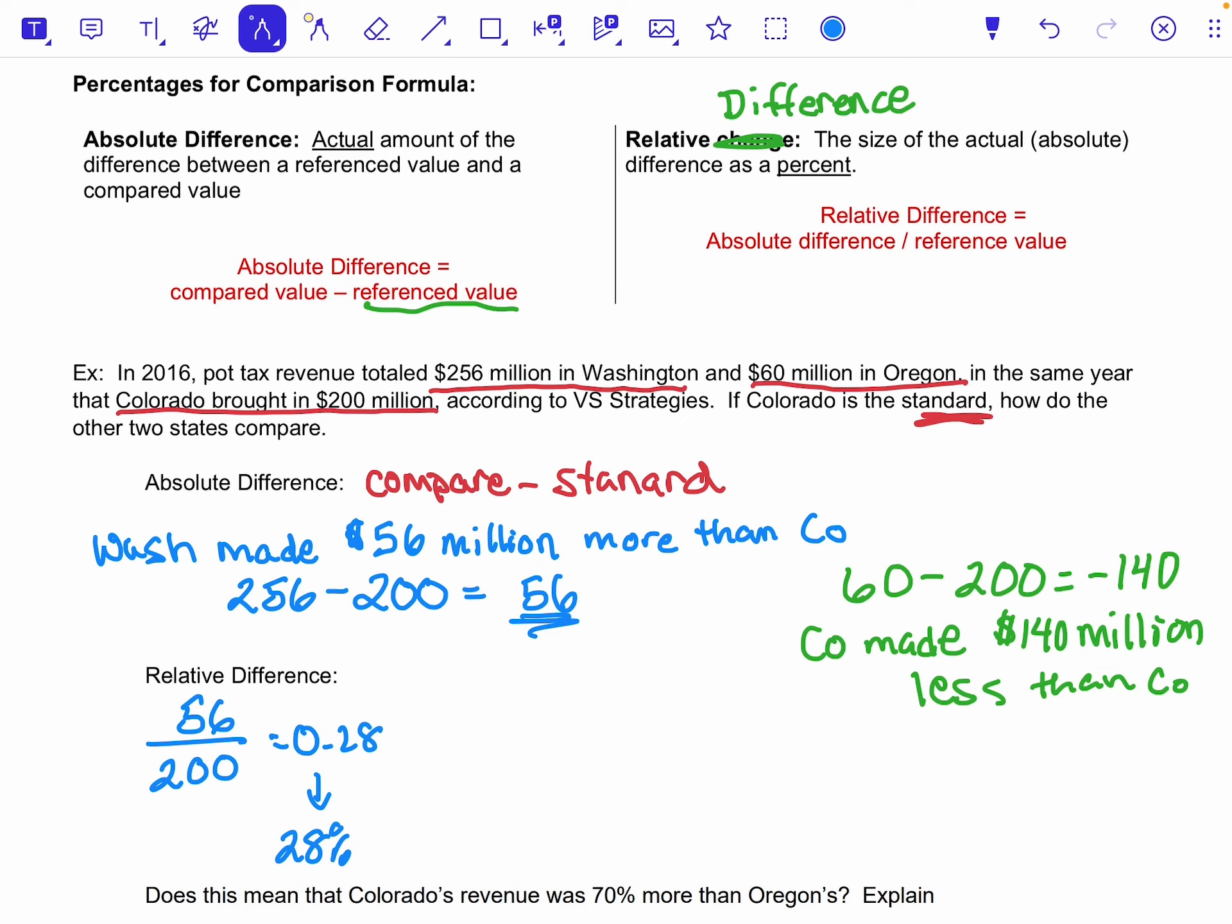And so if I turn that into a percent, that would be 28%. And so if I'm describing that in terms of a sentence, I would say Washington made 28% more revenue in Washington than in Colorado. So like Washington made more and that's the percent more it made.